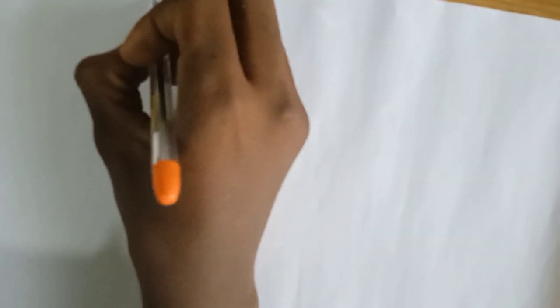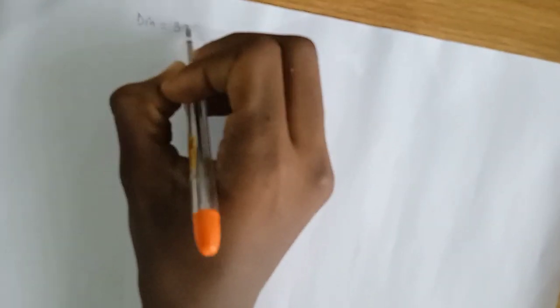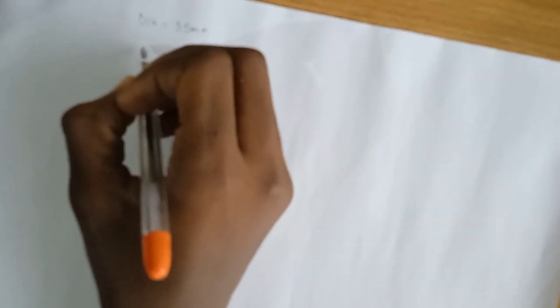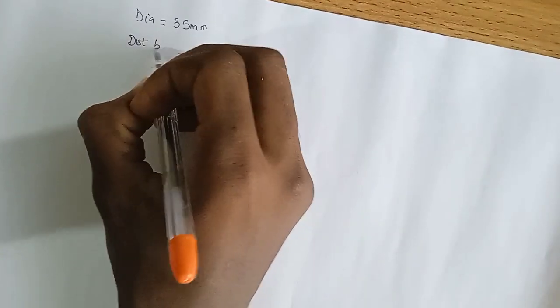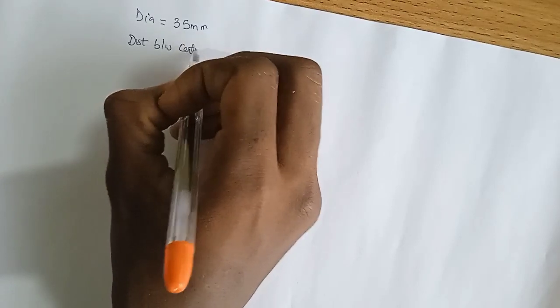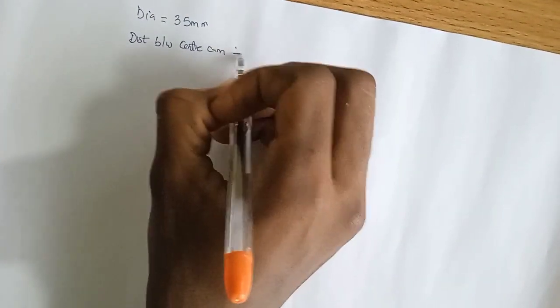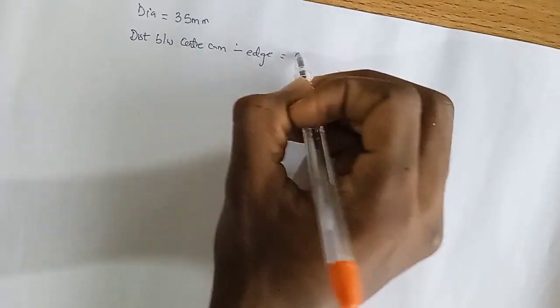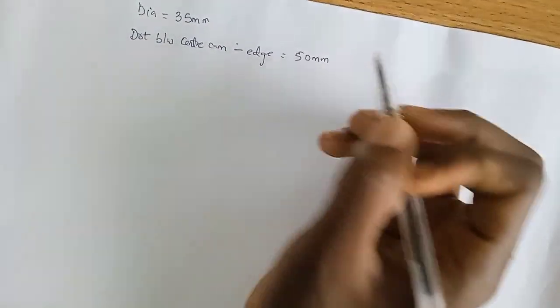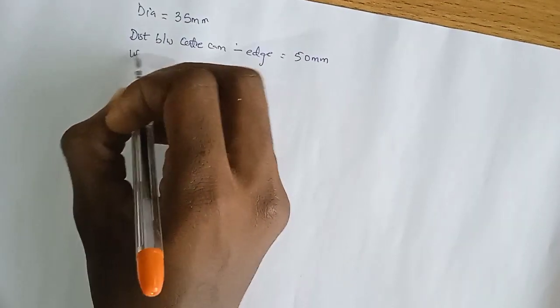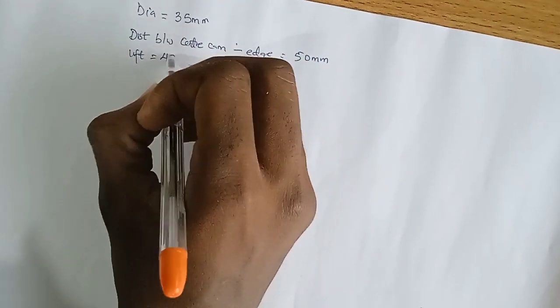In this question, we are given the diameter to be 35 mm. We are also given the distance from the center of the cam to the edge as 50 mm. And we were also given the lift — that's the length of the follower — to be equal to 45 mm.